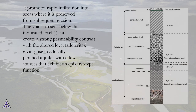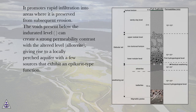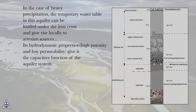The voids present below the indurated level can create a strong permeability contrast with the altered level, giving rise to a locally perched aquifer with a few sources that exhibit an epicarst-type function. In the case of heavy precipitation, the temporary water table in this aquifer can be loaded under the iron crust and give rise locally to artesian sources.